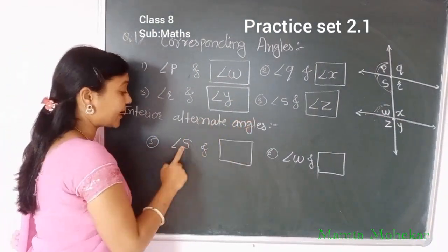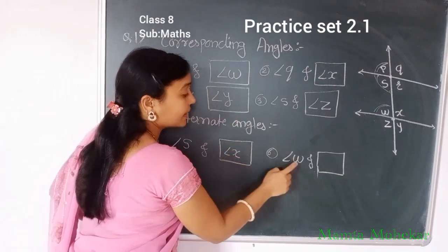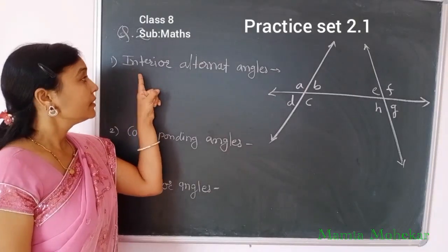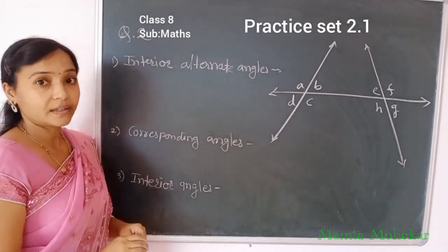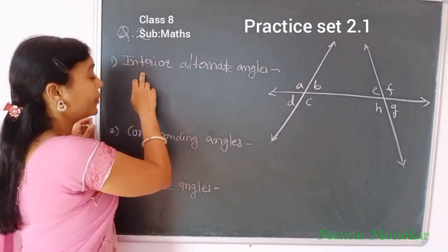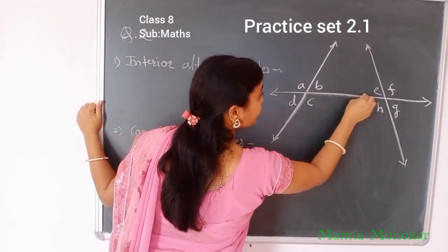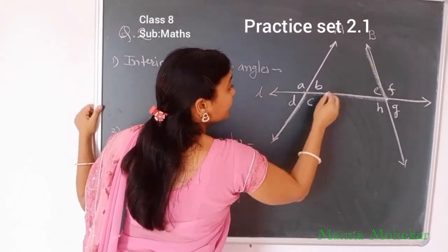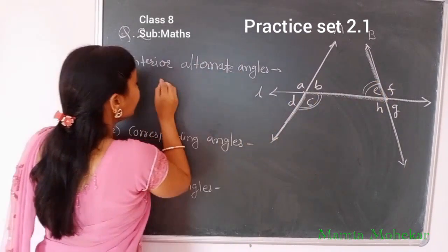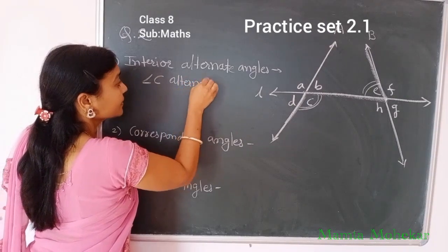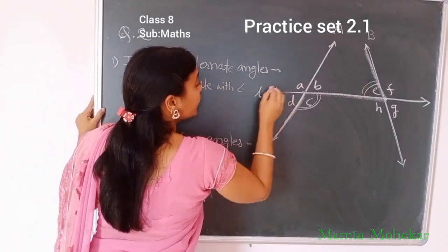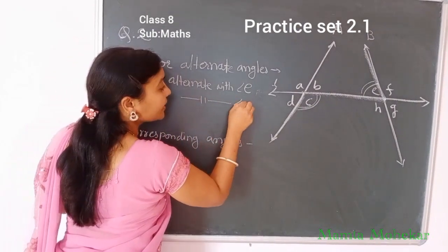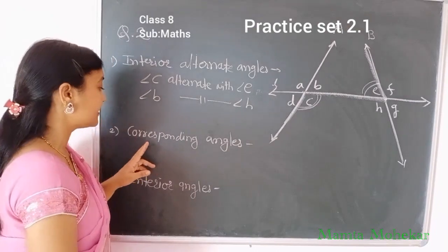Now we write the interior alternate angles. Interior alternate angles are the angles in the Z shape — opposite sides of the transversal and inside the two lines. For example, with line L as the transversal and lines A and B, angle C is the interior alternate angle with angle E. Another pair: angle B alternate with angle H. These are the interior alternate angles.